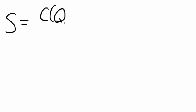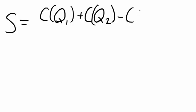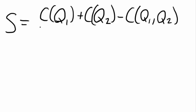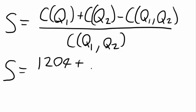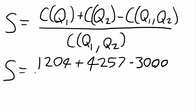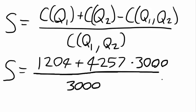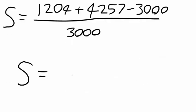Using the same economies of scope formula as before — economies of scope equals the cost of q1 plus the cost of q2 minus the cost of q1 and q2, all over the cost of q1 and q2 — we plug in our values: (1,204 plus 4,257 minus 3,000) divided by 3,000. We find our economies of scope equals 0.82.